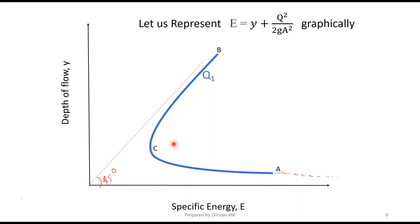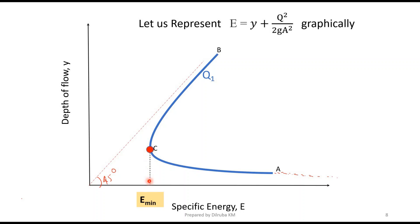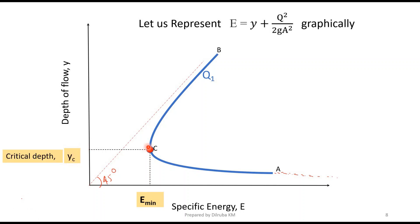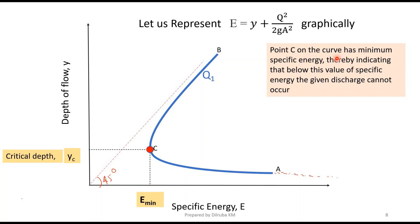Looking at this curve, point C has the minimum specific energy. The x-value of this point represents the minimum specific energy that can be provided for this discharge. The depth of flow corresponding to this minimum specific energy is known as the critical depth, represented by yc, and the velocity at this critical depth is known as critical velocity. Below this minimum specific energy value, the given discharge cannot occur.